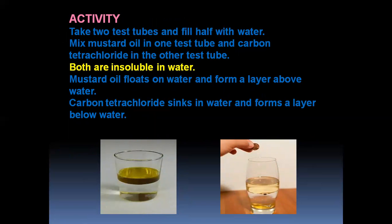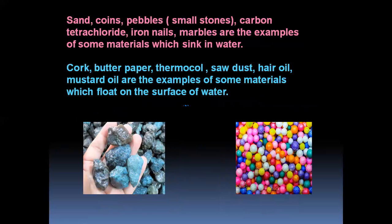Activity: Take two test tubes and fill them half with water. Mix mustard oil in one test tube and carbon tetrachloride in another. Both are insoluble in water. Mustard oil floats on water and forms a layer above the water. Carbon tetrachloride sinks in water and forms a layer below the water. Examples of materials that sink: sand, coins, pebbles, small stones, carbon tetrachloride, iron nails, marbles. Examples of materials that float: cork, butter paper, thermocol, sawdust, hair oil, mustard oil. You can do this practically at home and give more examples.